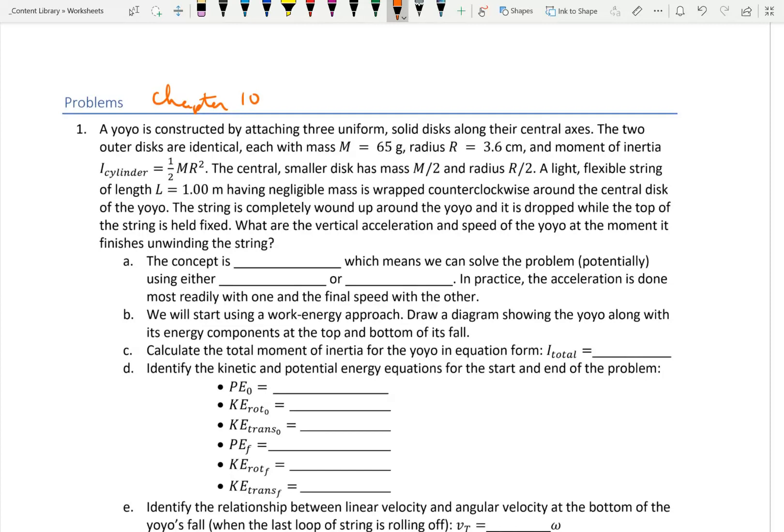This problem looks a lot like the one we did in class, just asking for something different. A yo-yo is constructed by attaching three uniform solid disks along their central axes. The two outer disks are identical, each with mass M equals 65 grams, radius R equals 3.6 centimeters, and moment of inertia I cylinder is one half MR squared. The central smaller disk has mass M over 2 and radius R over 2. A light flexible string of length L equals 1 meter, having negligible mass, is wrapped counterclockwise around the central disk of the yo-yo. The string is completely wound up around the yo-yo and is dropped while the top of the string is held fixed. What are the vertical acceleration and speed of the yo-yo at the moment it finishes unwinding the string?